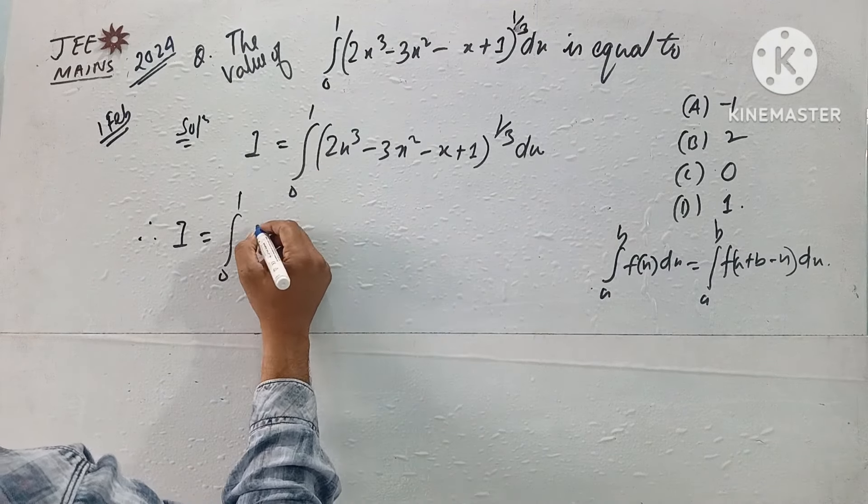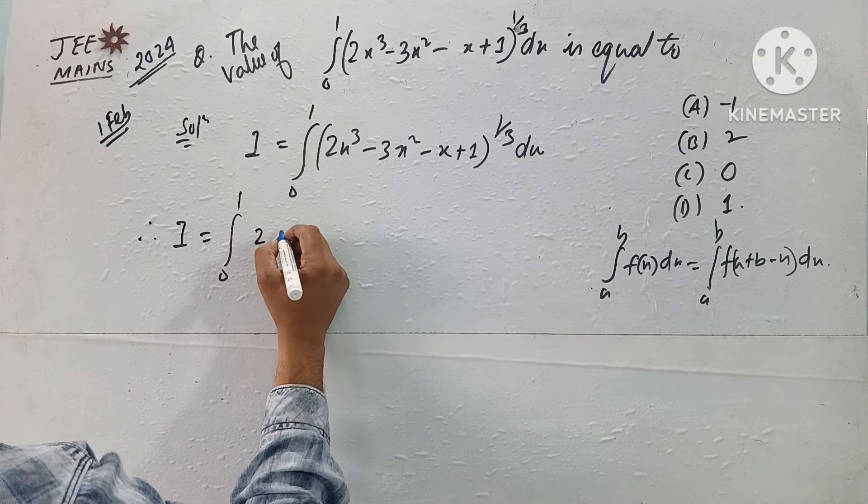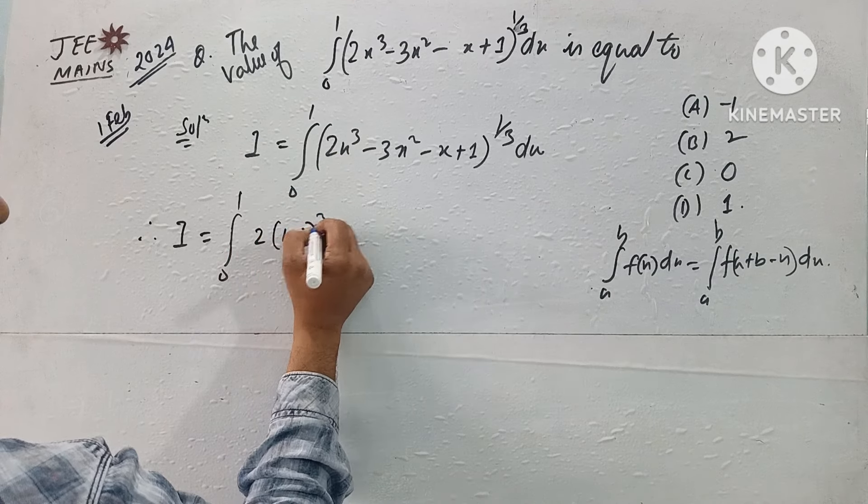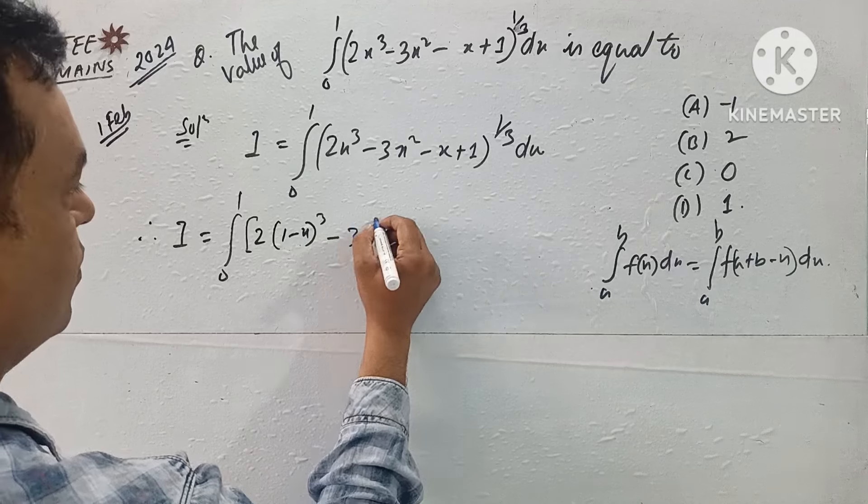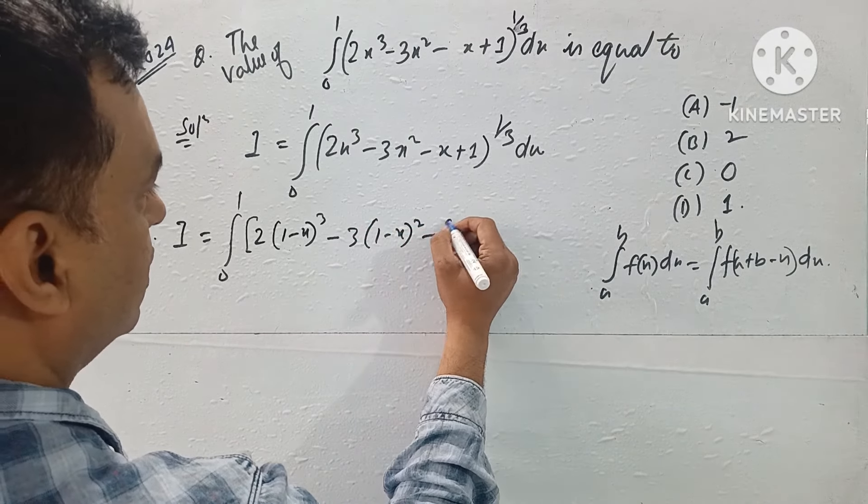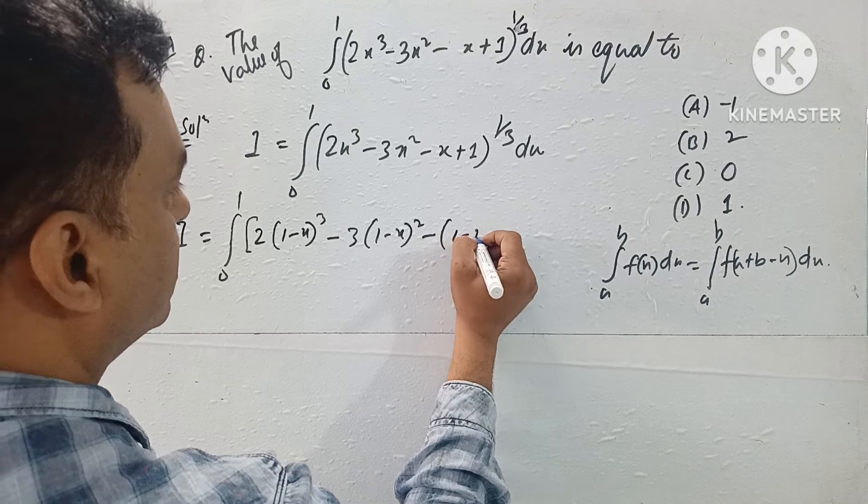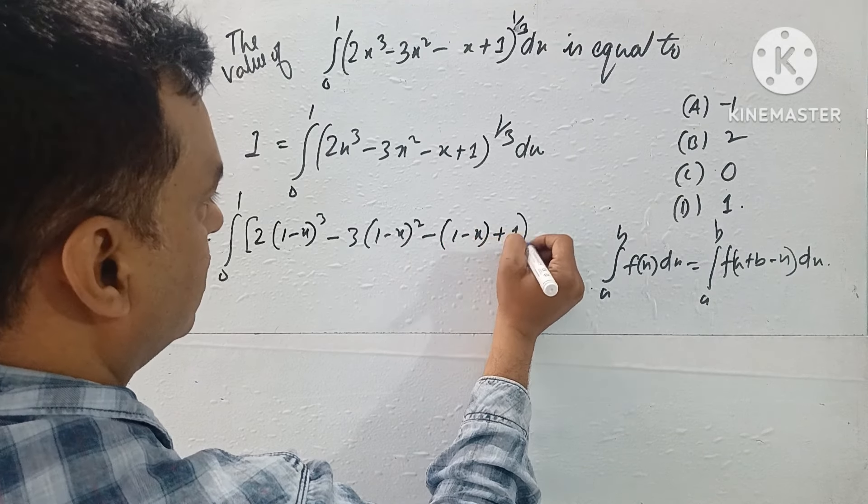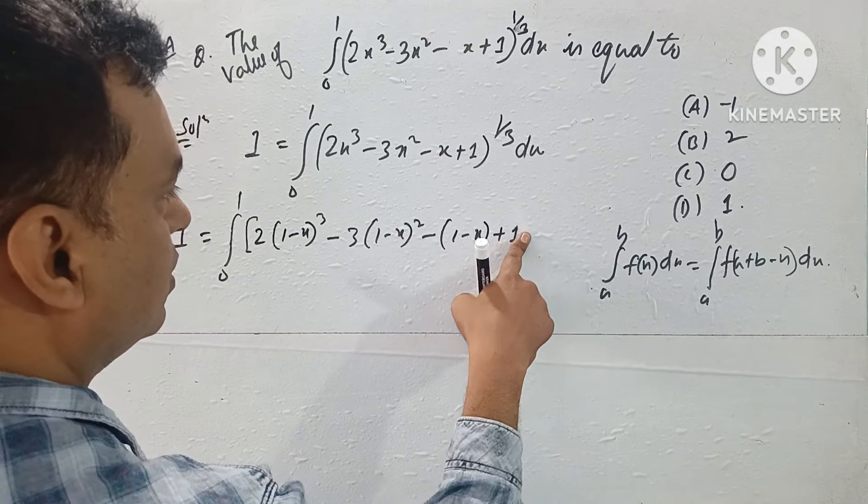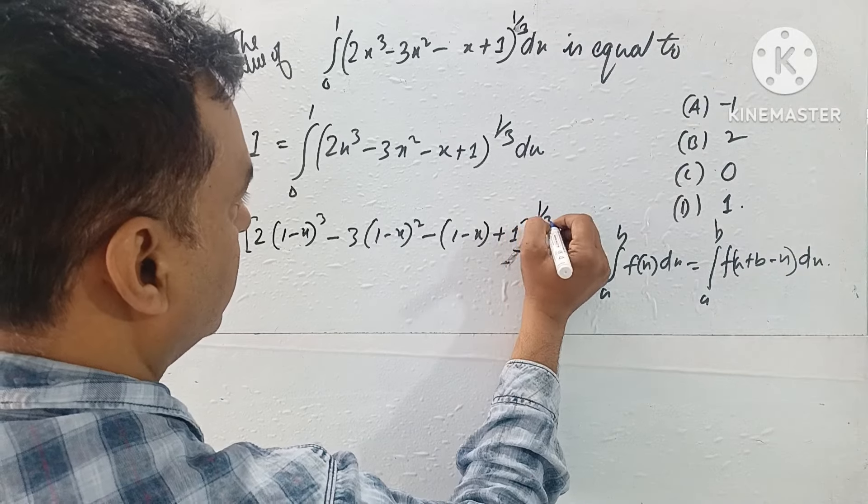Applying here, x ke jagah mein we write (1 - x)³, minus 3(1 - x)², minus (1 - x) plus 1, to the power 1/3 dx.